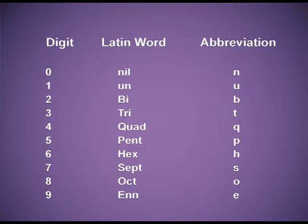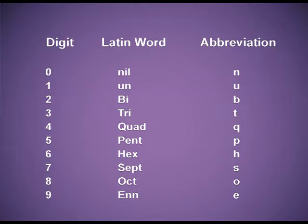The Latin word roots for the various digits are as follows. For 0, the Latin word is 'nil', abbreviation n. For 1, the Latin word is 'un', abbreviation U. For 2, it is 'bi', abbreviation B. For 3, it is 'tri', abbreviation T. For 4, the Latin word is 'quad', abbreviation Q. For 5, the Latin word is 'pent', abbreviation P.